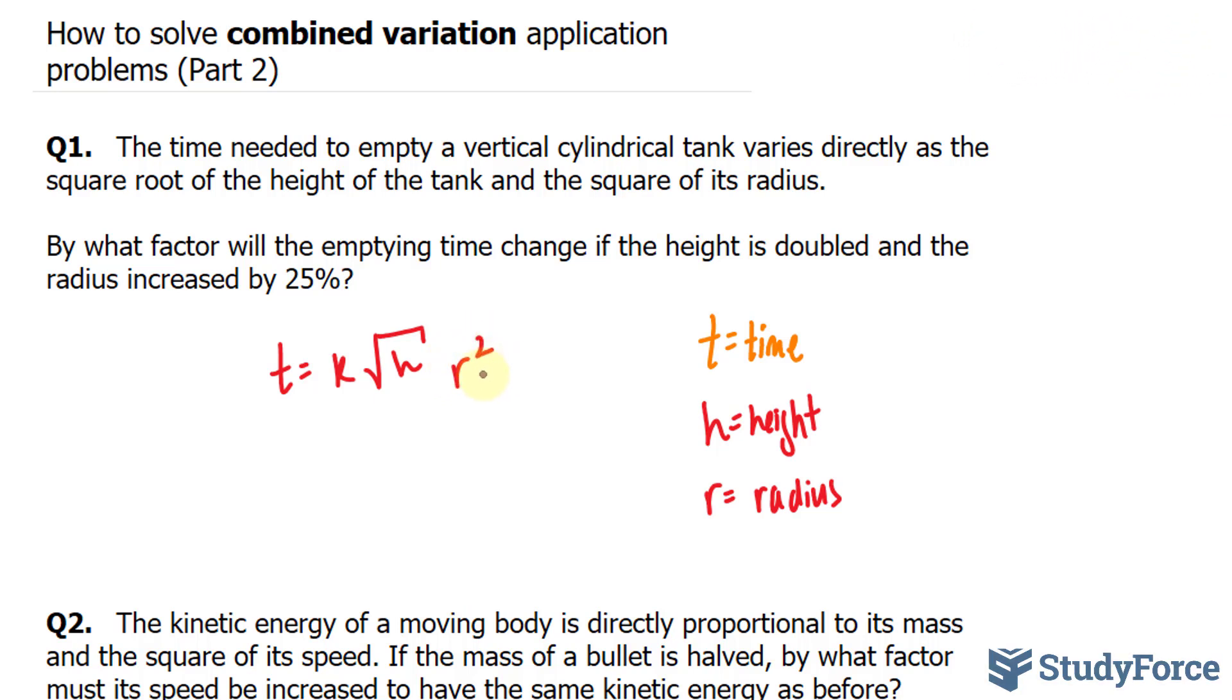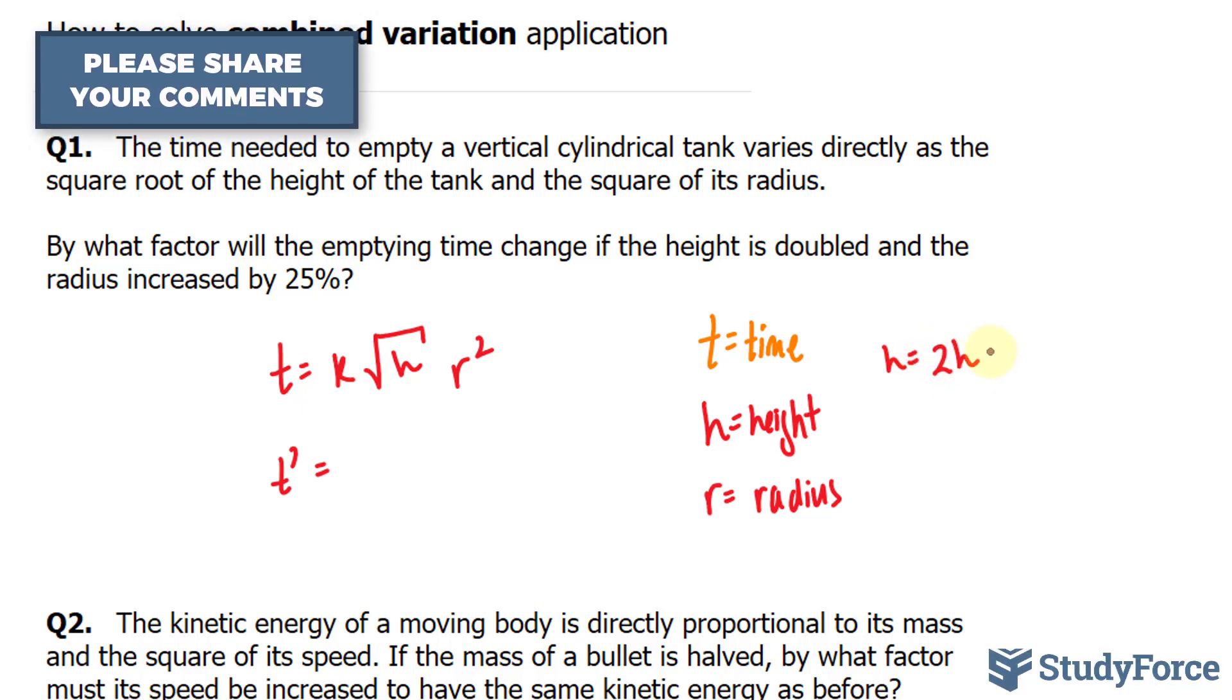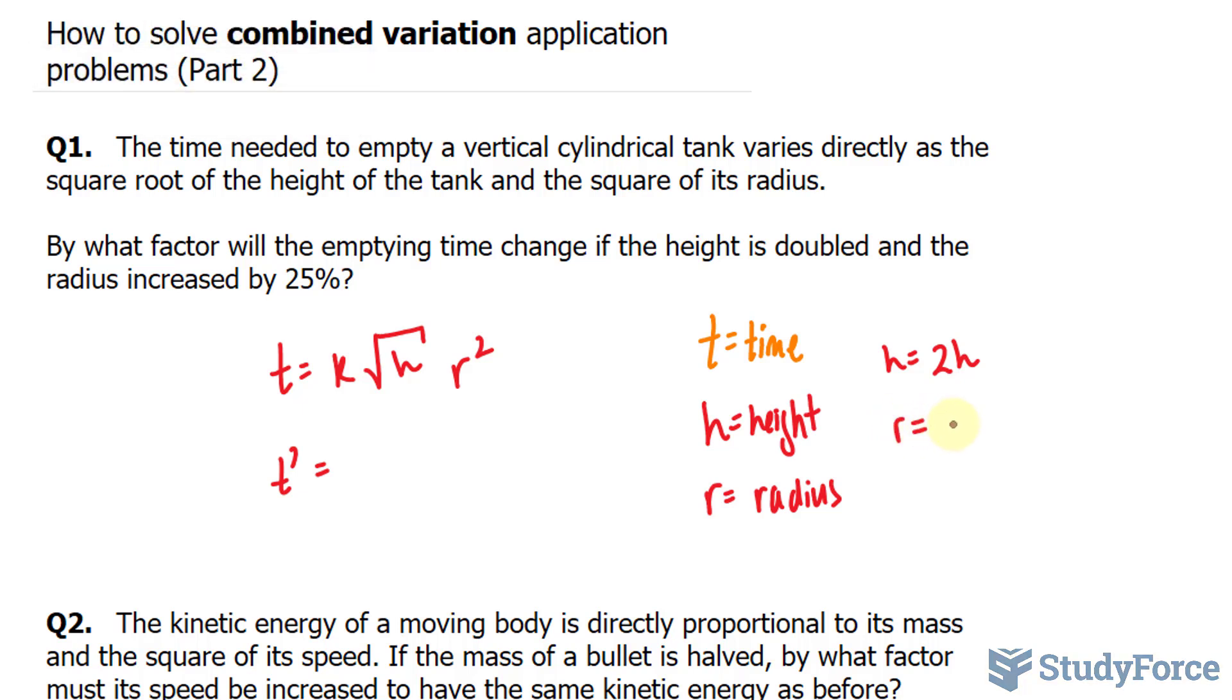By what factor will the emptying time change, so I'll represent the new time as t prime. If the height is doubled, so height is now 2 times the original, and the radius is increased by 25%, so r is equal to 1.25 of the original r.